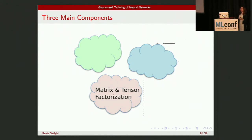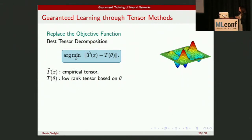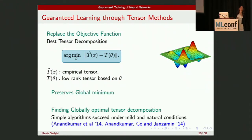The first component is matrix and tensor factorization. What we do is replace the objective function of the neural network with that of best tensor decomposition — you have a tensor and you want to find a low-rank tensor that approximates it as best as possible. What is good about this transformation is that you're still preserving the global optimum — it's still the same problem. But our group showed in the past that you can find the global optimum for a tensor decomposition, even though you're still in the domain of non-convex optimization. For this specific non-convex problem, we know how to recover the global optimum with very mild and natural assumptions.